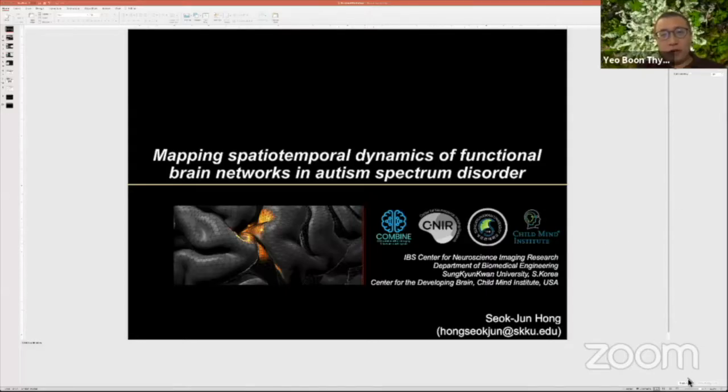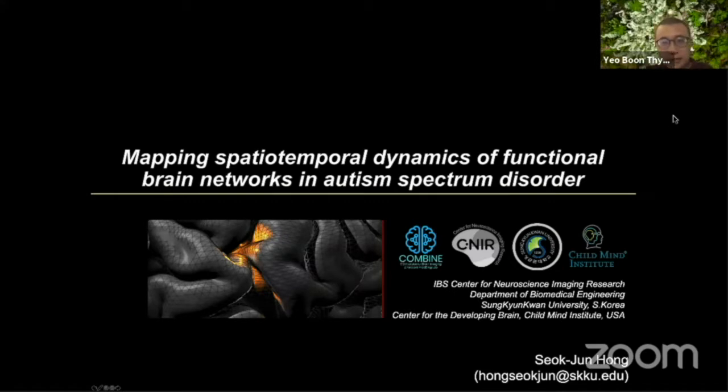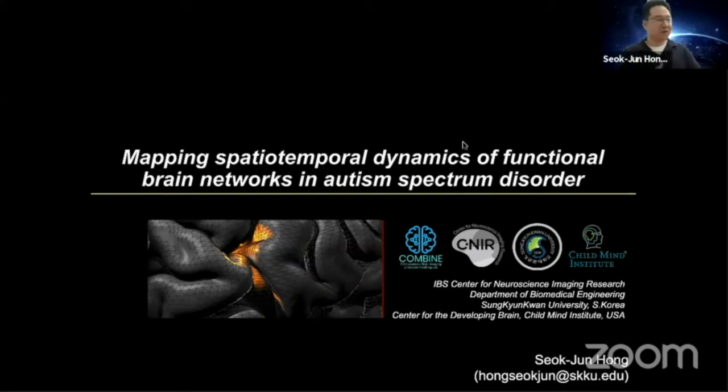Seok Joon, you can go for it. I'm Seok Joon, thank you for the invitation. Today I'll talk about how we can map the spatial-temporal dynamics in functional brain networks in autism spectrum disorder. I'm probably the only one talking about clinical samples here. Autism spectrum disorder is characterized by many behavioral phenotypes, including social interaction deficits, communication anomalies, restricted and repeated behaviors, and altered sensory sensitivity.